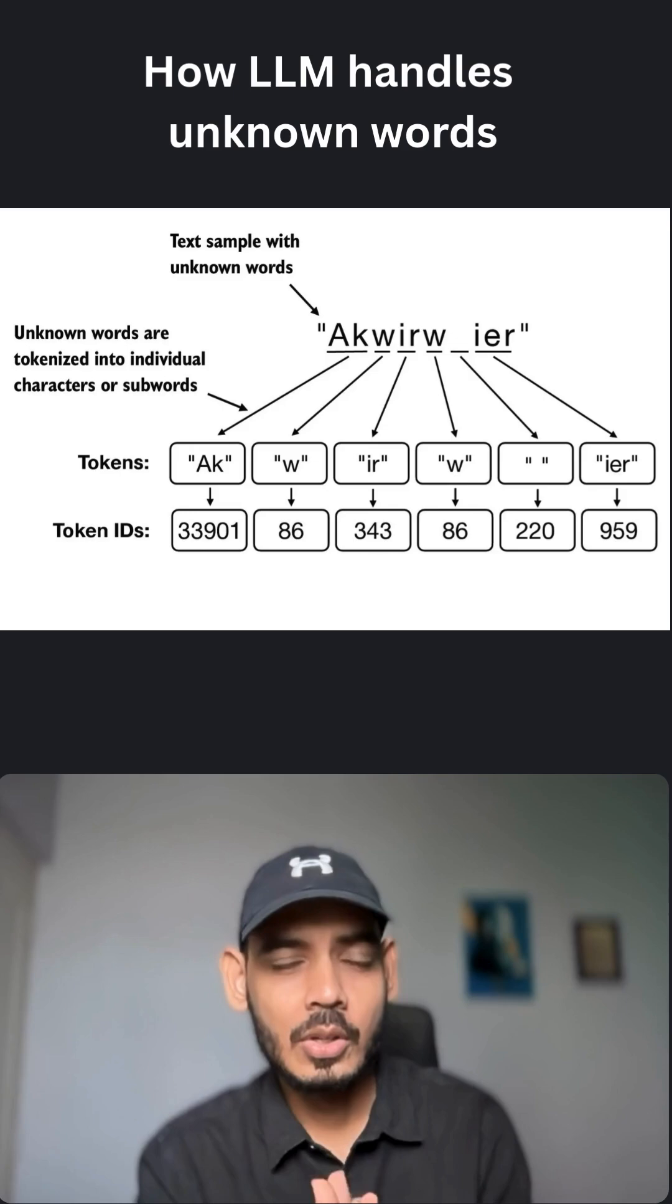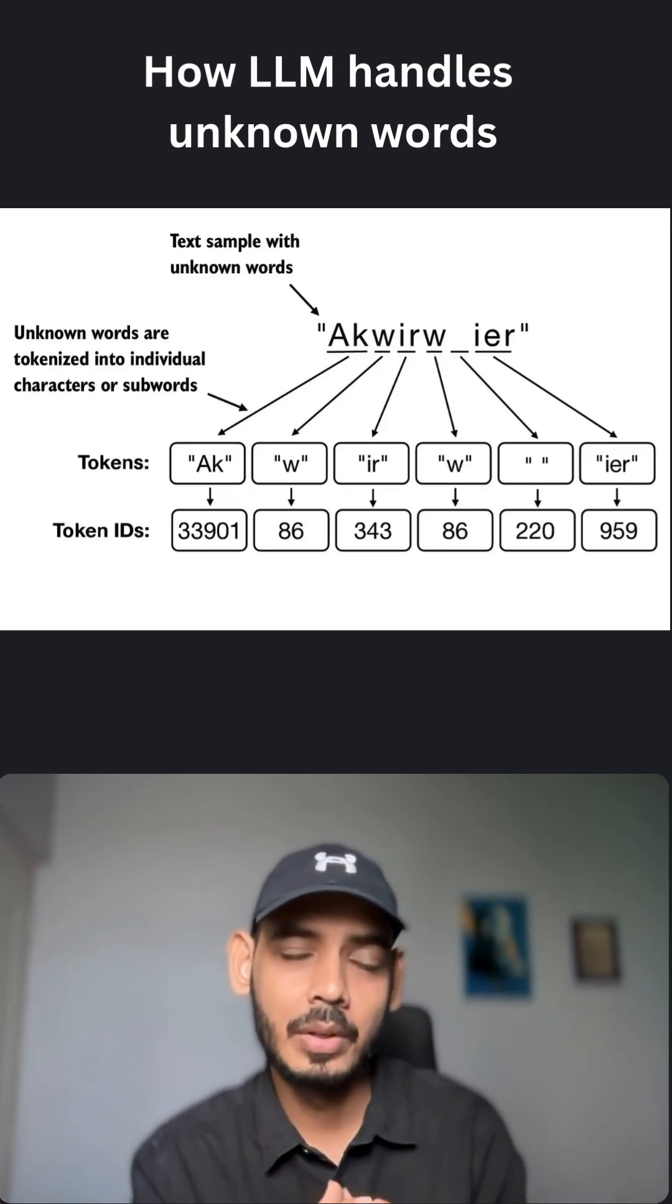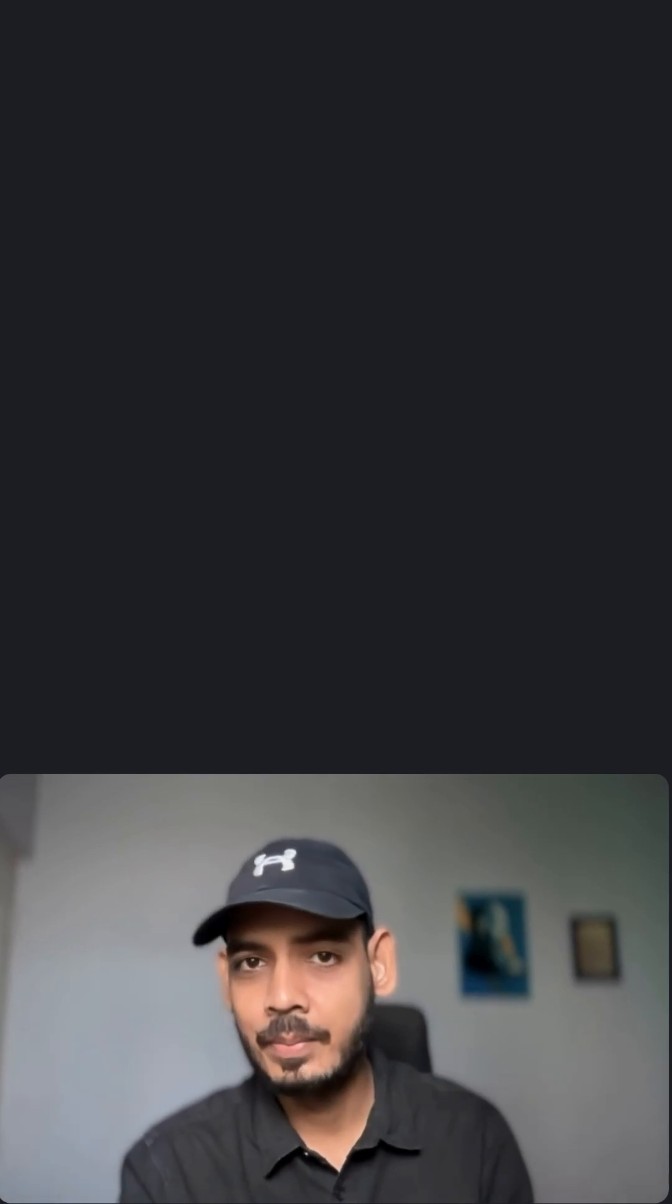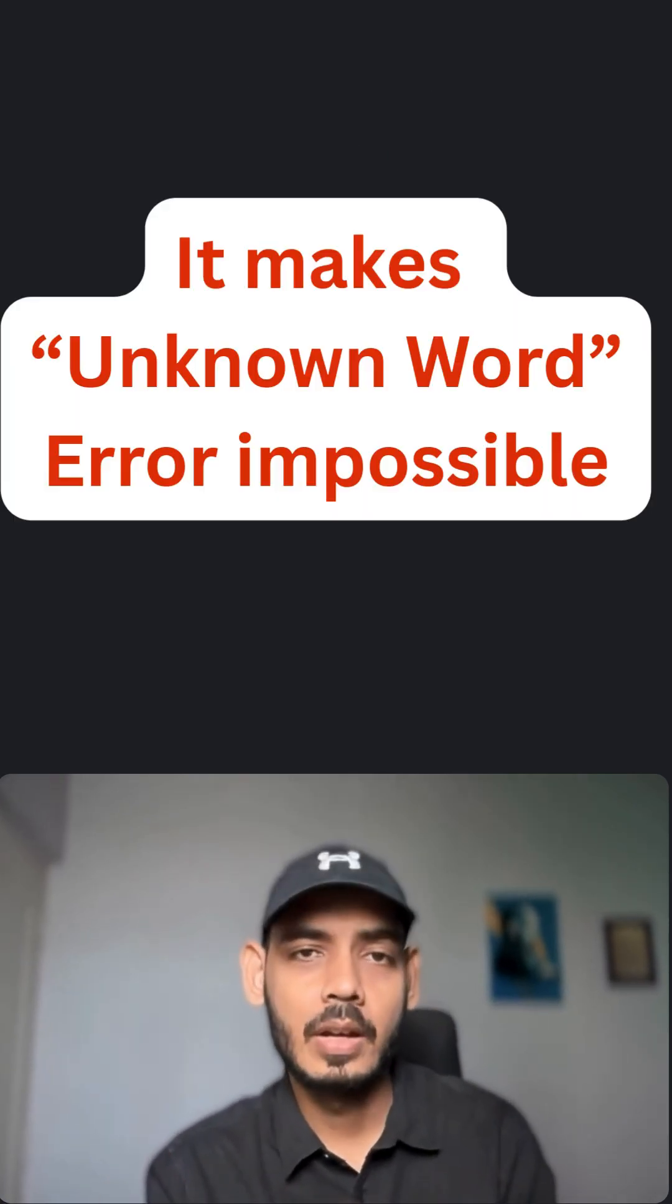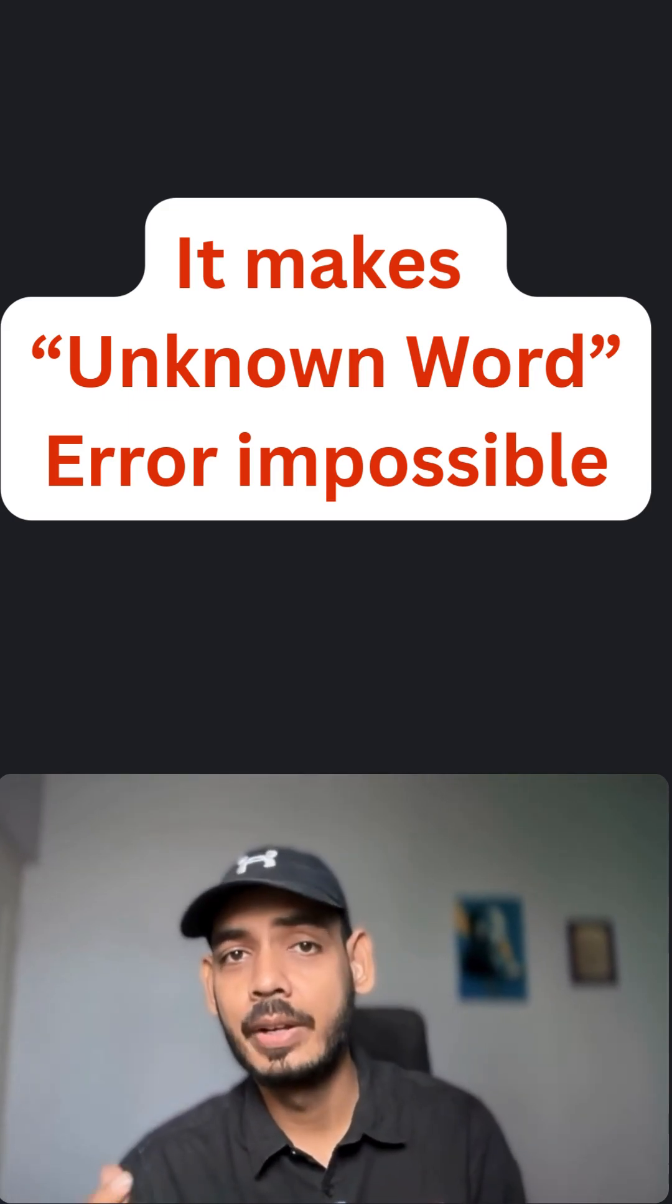This process ensures that when the LLM finds an unknown word, it tries to match with subword units or even characters. This ensures the tokenizer can process any text, making unknown word errors impossible.